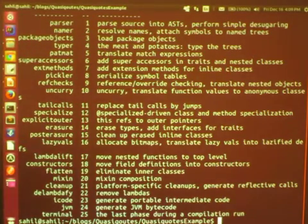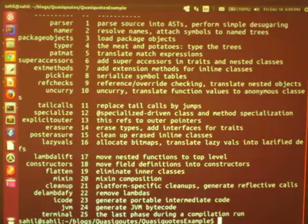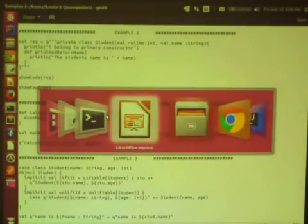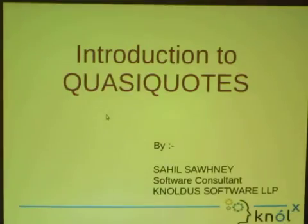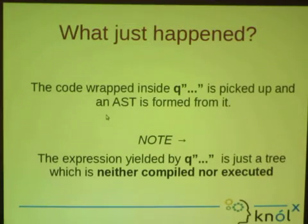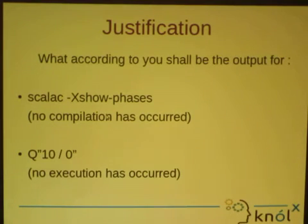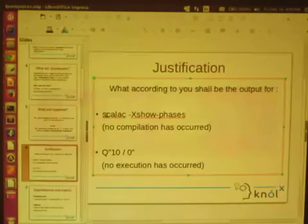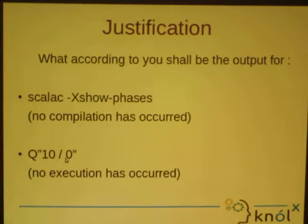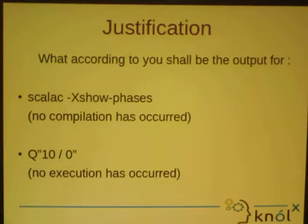The first phase says that the parser parses source into ASTs. Since no bytecode is generated, we can't say that actual compilation took place. That would be our justification that no compilation has taken place. Another justification would be dividing by zero. Since all of us know that division by zero gives a runtime exception, if I write this expression and get a runtime exception, that means execution has taken place. But we will verify that it does not.